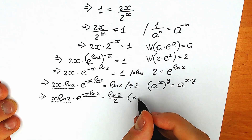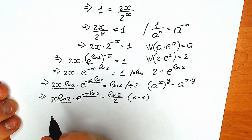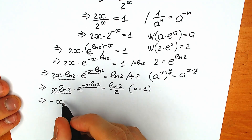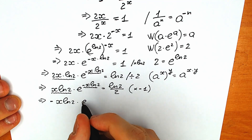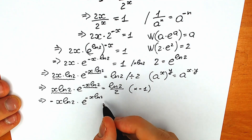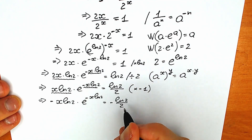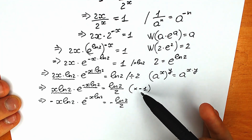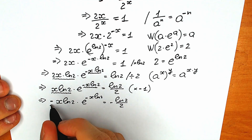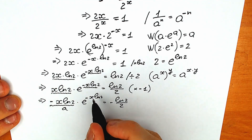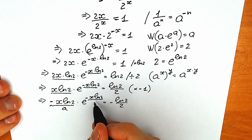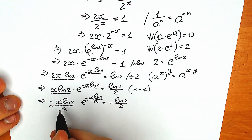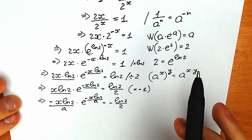So when we multiply both sides by minus 1, we have minus x natural log 2 times e to the power minus x natural log 2, equal to minus natural log 2 over 2. After these three steps — multiplying by natural log 2, dividing by 2, and multiplying by minus 1 — we can see that minus x natural log 2 is our a, and in the exponent we also have minus x natural log 2 as our a. Now we can easily apply the Lambert W function, because we have the structure a times e to the power a.